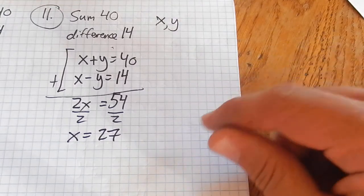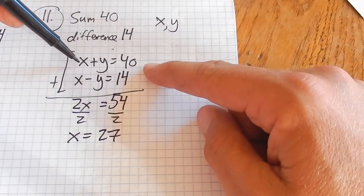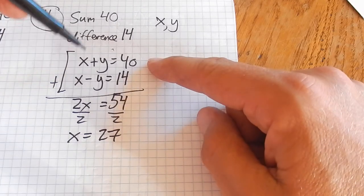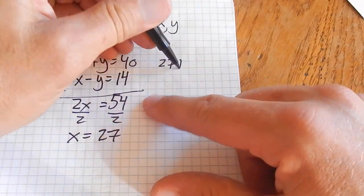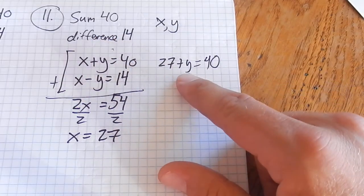So if x is 27, I can go back and figure out what my other value would be. I can plug it into either one of these equations. I'll plug it into this one. 27 plus y equals 40. So 27 plus what is 40?